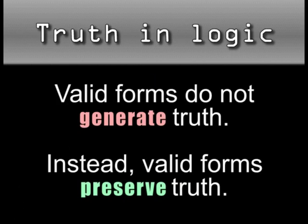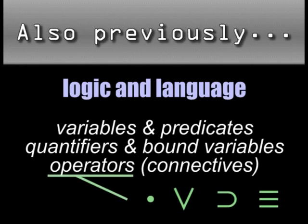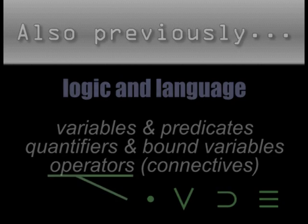The toolkit of logic doesn't generate truth. Instead, it allows statements to remain true throughout the process of developing an argument. We might call it truth-preserving rather than truth-producing. We can analyze the function of every one of the operators you learned in the logic as a language series within that context of truth-preservation. This is normally done using something called a truth table.